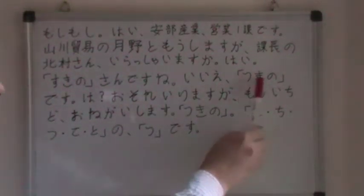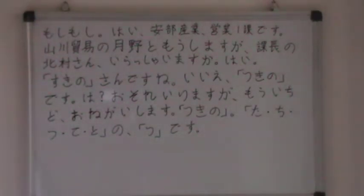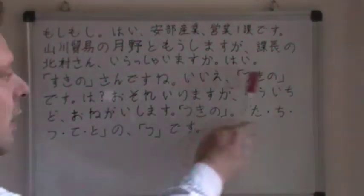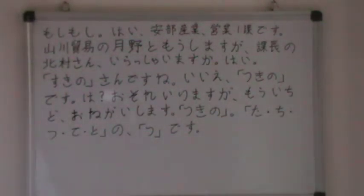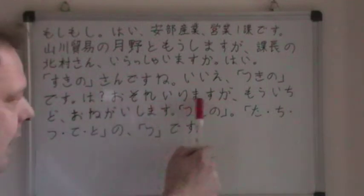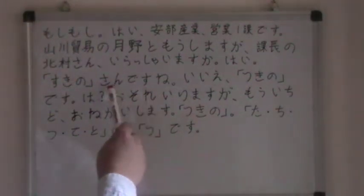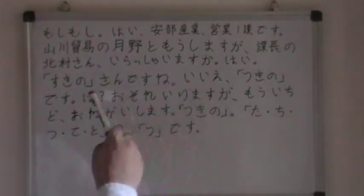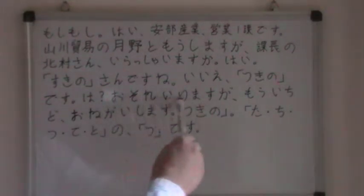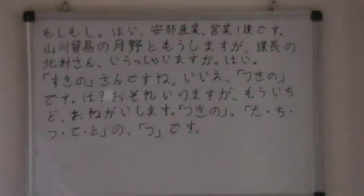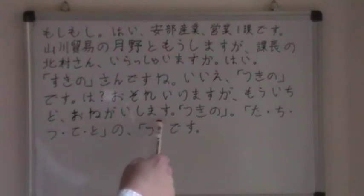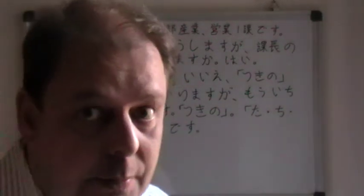Ie — no. Tsukino desu — it is, or I am. No, the name is Tsukino, not Tsukino. Huh? That's — I beg your pardon. Osoreirimasu — you already had that, meaning I'm terribly sorry. Osoreirimasu ga — but. Mou ichido — one more time. Onegai shimasu — would you be so kind, or please. So: I'm sorry, could you please repeat it?